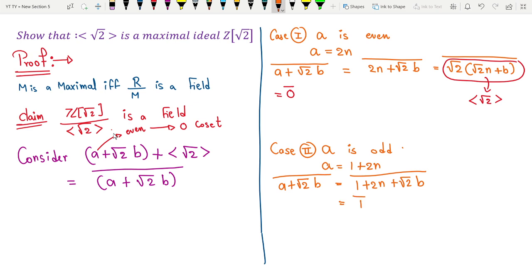So it is 1 bar plus root 2 times root 2n plus b whole bar. Again it is same as 1 bar plus this, which should be same as 0 bar because the representative is inside the set. So when a is an odd number, then it is same as 1 bar, otherwise it was 0 bar.